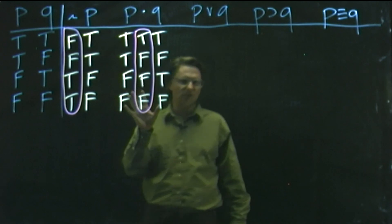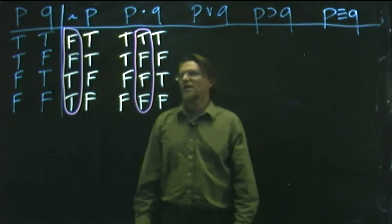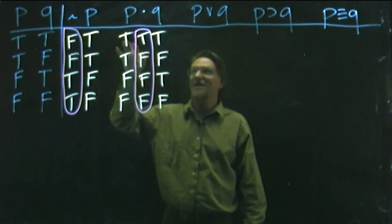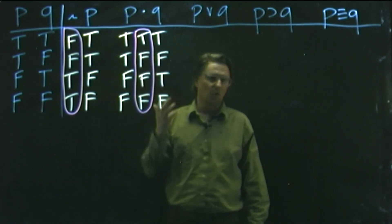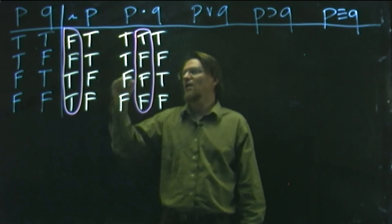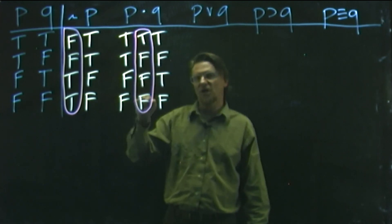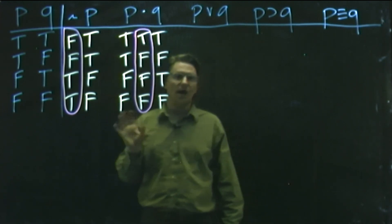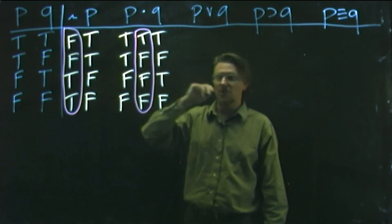We circle the main operator column and notice this pattern. The easiest way to remember this is to recognize that the only way to make a dot true is when both sides are true. Another way to put that same information is: anytime you have false feeding into the dot, the dot is false. If you can remember either one of those sentences, you'll remember the truth table for this logical operator.